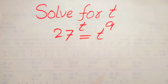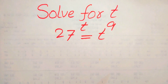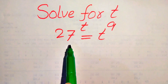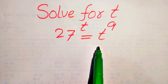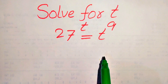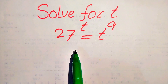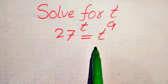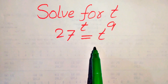Hello everyone. How to solve this problem for the values of t: if we have 27 to the power of t equals t to the power of 9, and we solve this problem for all the values of t. You see here on the left hand side we have an exponential term, and on the right hand side we have a polynomial term of degree 9. So we find the values of t.